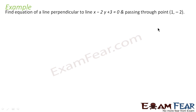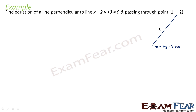Here we have to find the equation of a line that is perpendicular to the line x minus 2y plus 3 is equal to 0 and passing through (−1, 2). We have this line whose equation is x minus 2y plus 3 is equal to 0, and there is one more line that is perpendicular to this line passing through (1, −2). We have to find the equation of this line L.